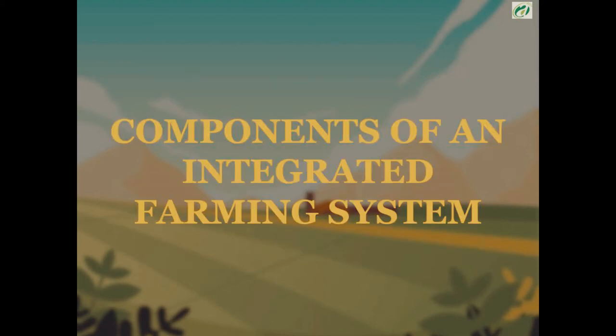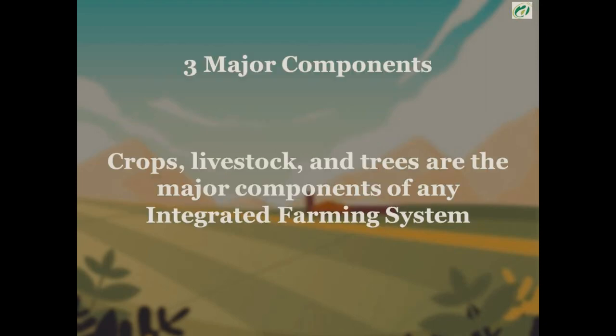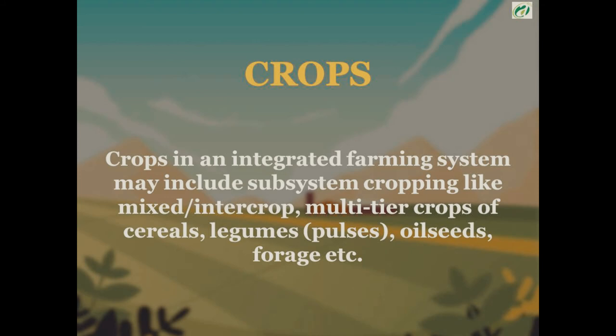Now, what are the components of an integrated farming system? There are three major components: crops, livestock, and trees. Crops in an integrated farming system may include subsystem cropping such as mixed cropping, intercropping, and multi-tier crops of cereal, legumes, oilseeds, forage, etc.